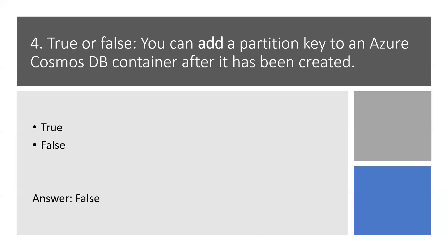Question 4. True or false? You can add a partition key to an Azure Cosmos Database container after it has been created. True or false? False. Before we pick the answer, let's talk about partition key. A partition key is the value by which Azure organizes your data into logical divisions. It should aim to evenly distribute operations across the database to avoid hot partitions. So here is the right answer: False.